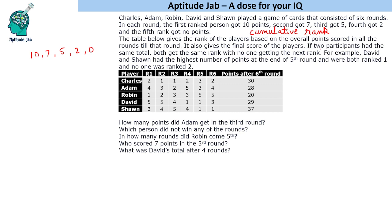Additionally, if two participants have the same total, both get the same rank with no one getting the next rank. For example, after round five, David and Sean had the same total, so both were ranked first and no one was second. Charles and Adam also had third rank — same total, no one ranked fourth. This special case only occurred in the fifth round; in all other rounds, all had different rankings.